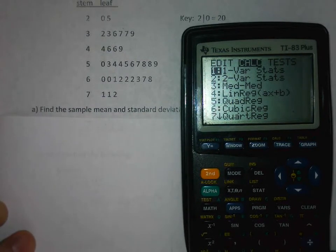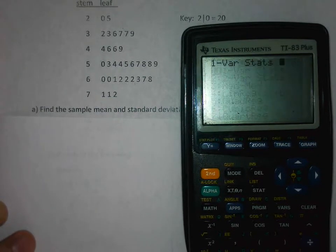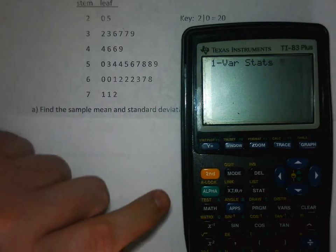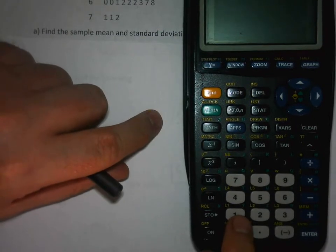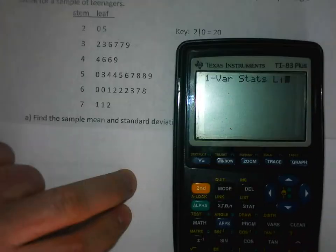Now to calculate the mean and standard deviation and other statistics, press STAT again and then over to CALC. There's only one variable, meaning the number of texts that were sent, so we're going to do 1-Var Stats. This is where you do SECOND 1 - notice how L1 is written above the 1, so you're going to do SECOND 1 for list one.